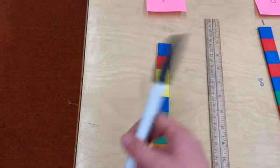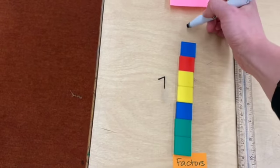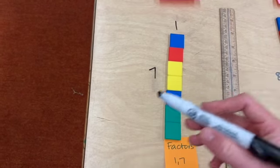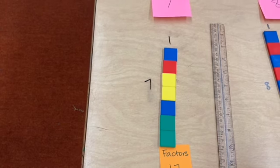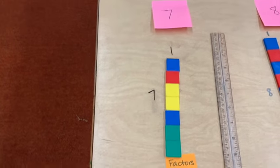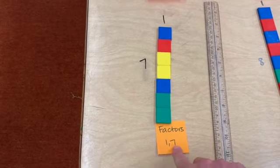If we come over to 7, here we have 7 by 1. Those are the only two numbers that we can multiply together to get 7, so the factors of 7 are 1 and 7.